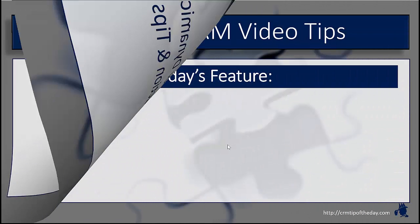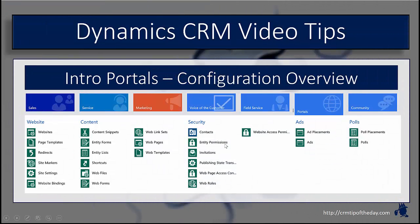In today's video, we're going to continue our portal introduction series and talk a little bit about the configuration piece. If you remember last time, we talked about the basic setup — how do you get the portal set up inside the application, how do you create a couple of pages, how do you edit the navigation and edit some of the content? Now I want to take a look at it from the CRM perspective and how do you actually go in and tie it to entities inside the application.